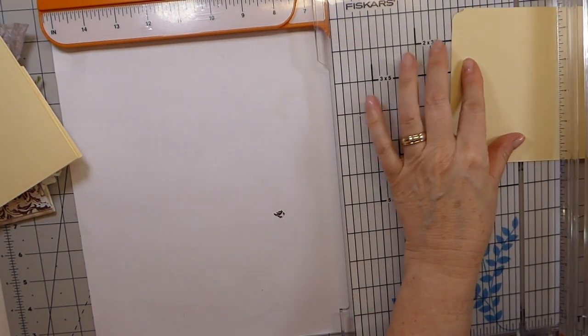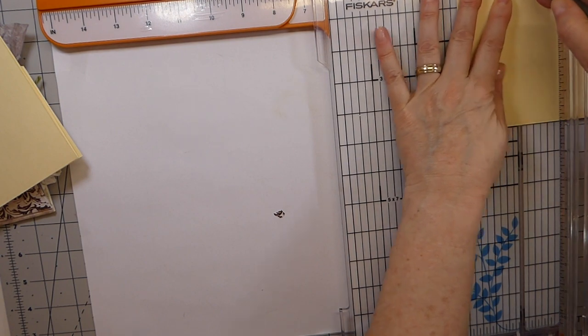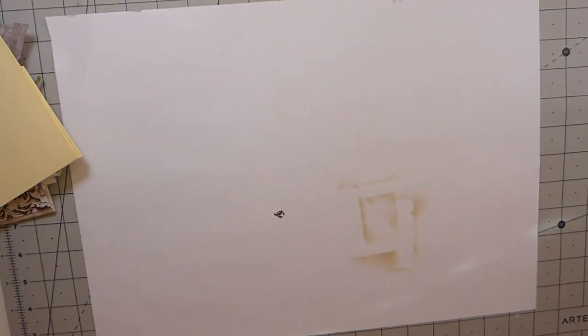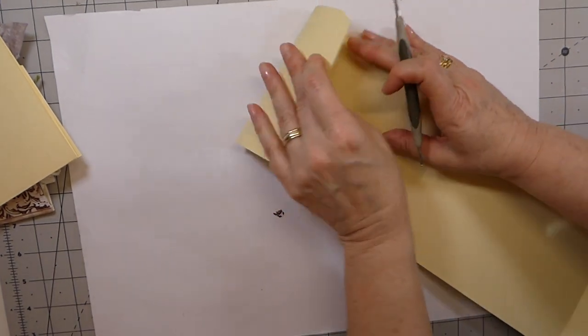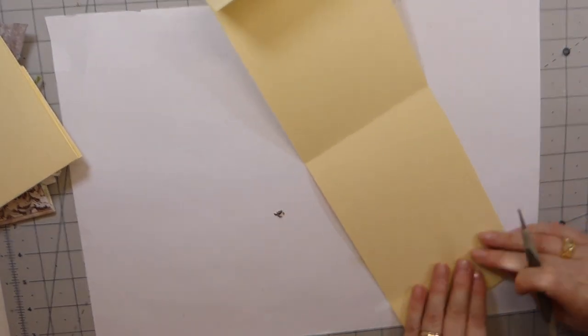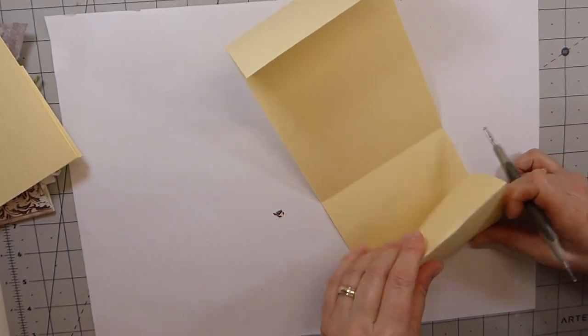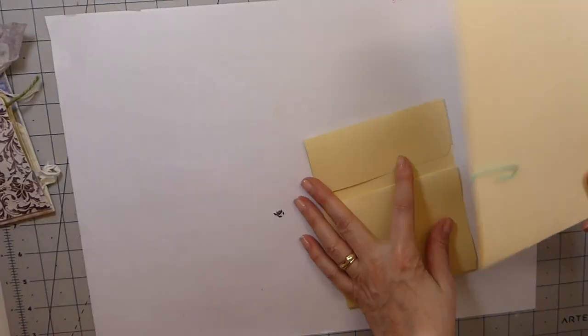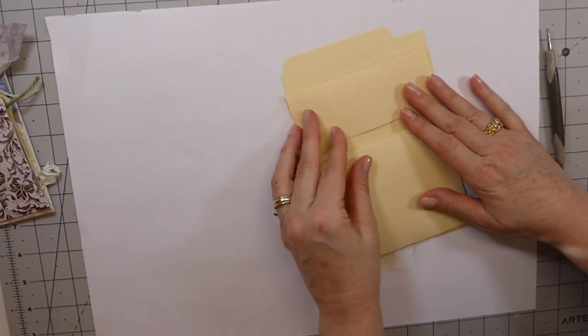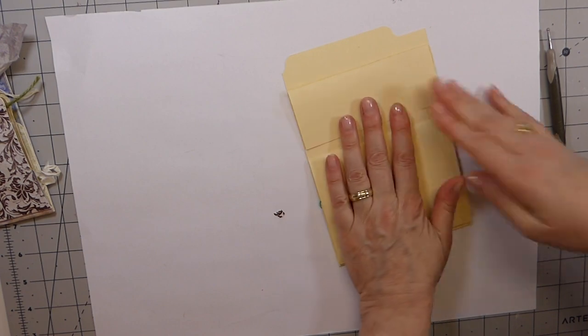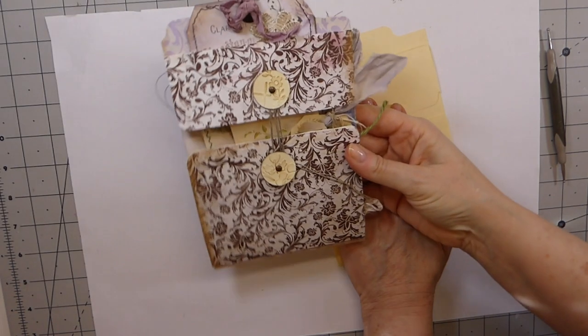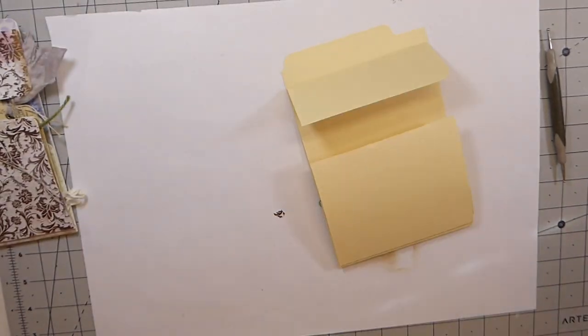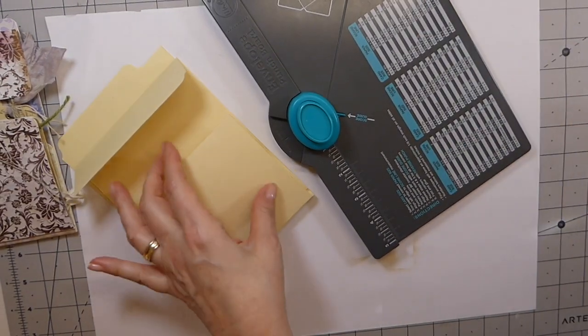And then flipping it over so that we're working on the shorter section now, we're going to score that at two inches. So what that does is that just folds up so that we've got kind of like the coin envelope portion of the front. So now all I'm going to do is just go ahead and round off these corners.